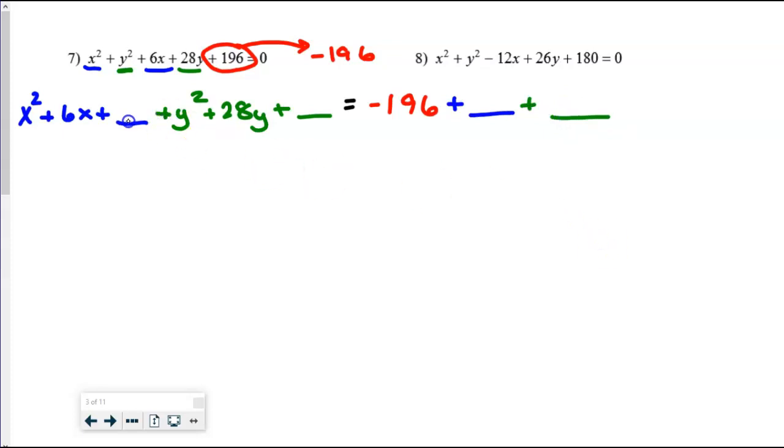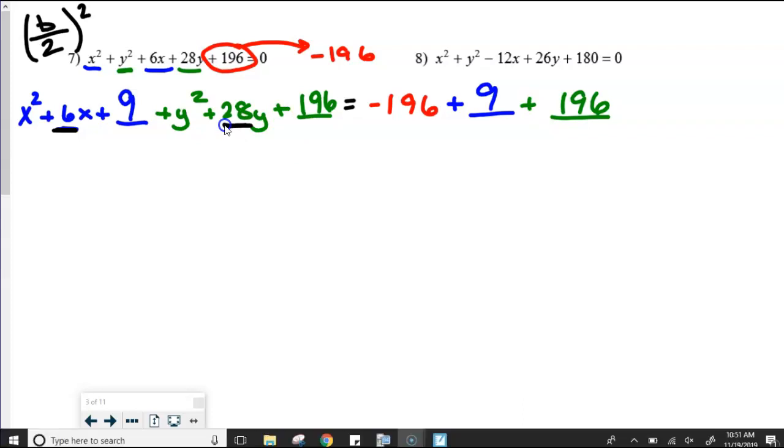All right. Let's go fill in what these blanks are. So the formula that you're supposed to use for the blanks is that you take whatever your middle number is, you cut it in half, and then you square it. So for us, 6 cut in half squared would be a 9. And then 28 cut in half would be 14 squared is 196. So just to recap, you took this middle number here, and this middle number here, and this middle number here, you cut them in half, squared them, and that's how you got the blanks.